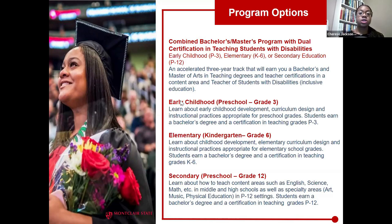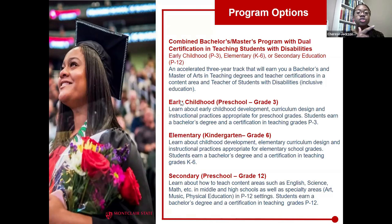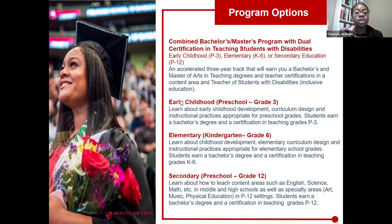With each of these three certifications, you also have the option to do a combined bachelor's/master's program. This means you can complete a five-year program, get your bachelor's in whatever subject area you're interested in, your teaching certification in one of the three — P through 3, K through 6, or P through 12 — your master's of arts in teaching, plus an additional certification in teaching students with disabilities. So at the end of five years, you would have two degrees and two certifications.